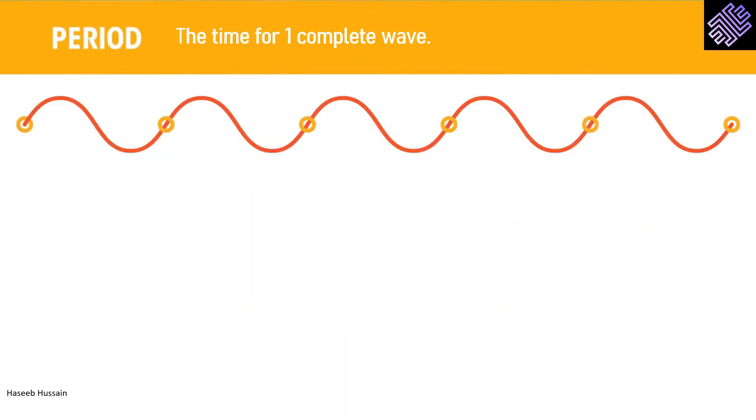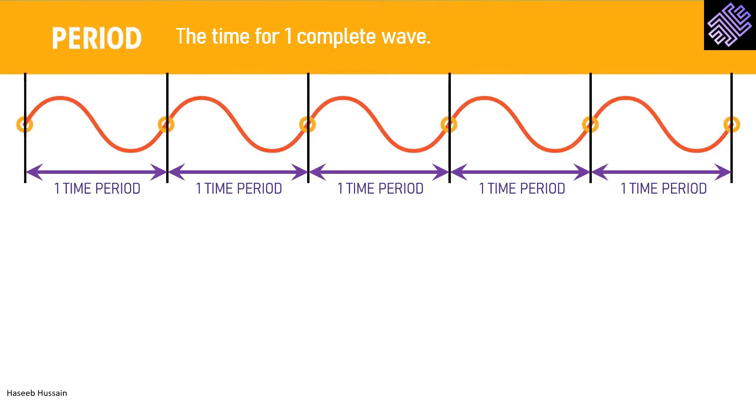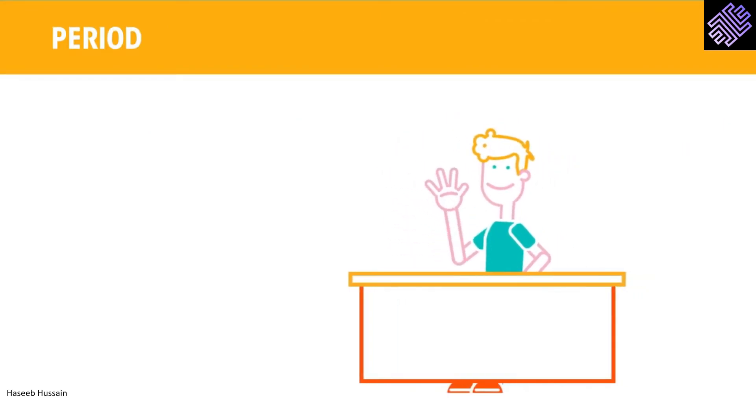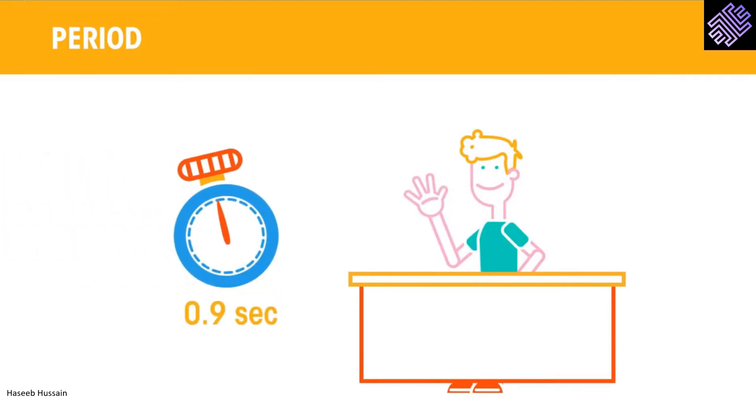Now let's discuss time period. Time period is the time for one complete cycle or wave. In one time period, we get a whole wavelength including one crest and one trough. Like time taken for one person to stand up, wave and sit down. Time period is measured in seconds.